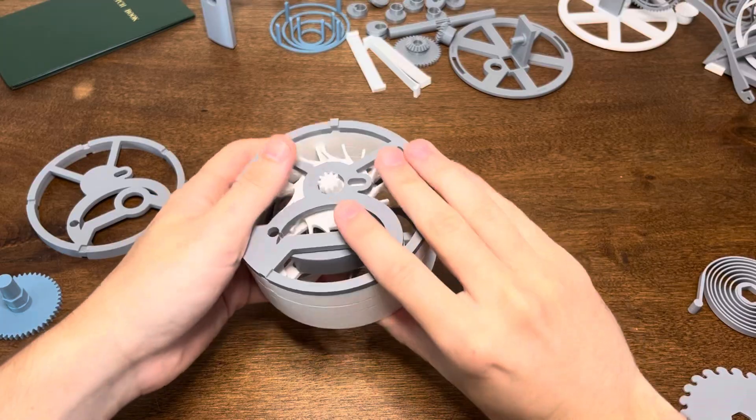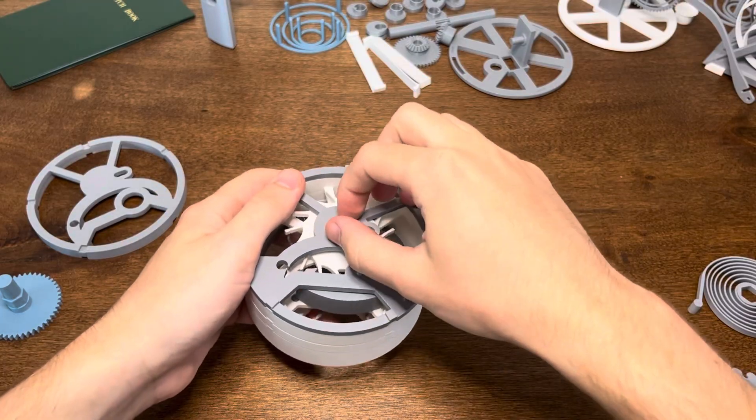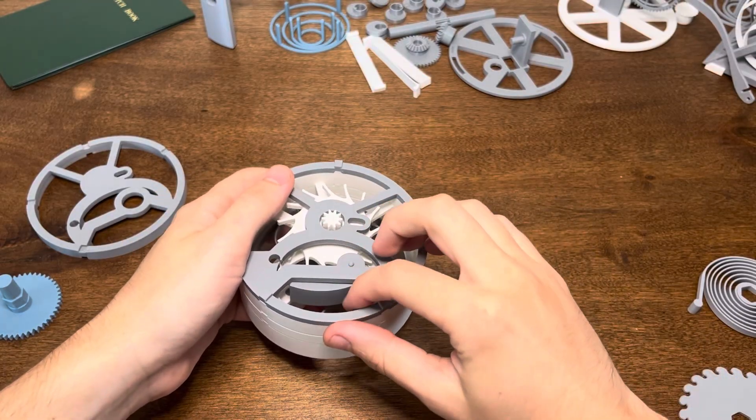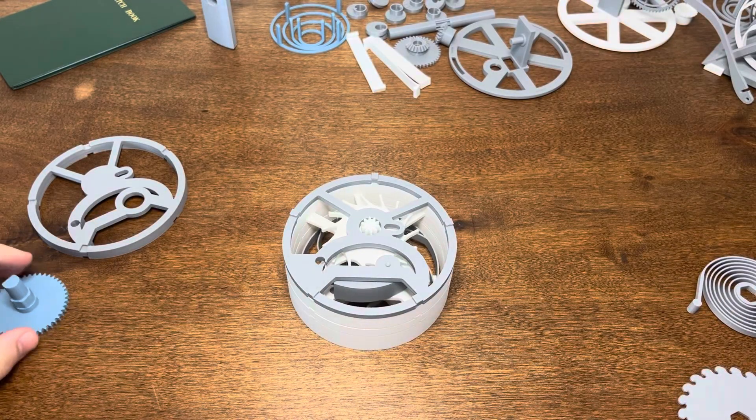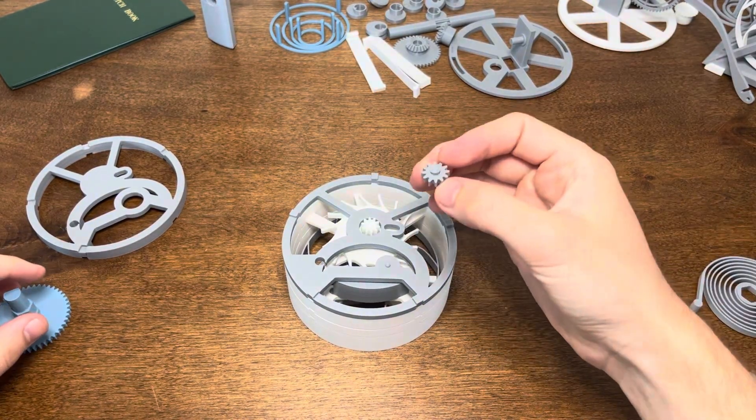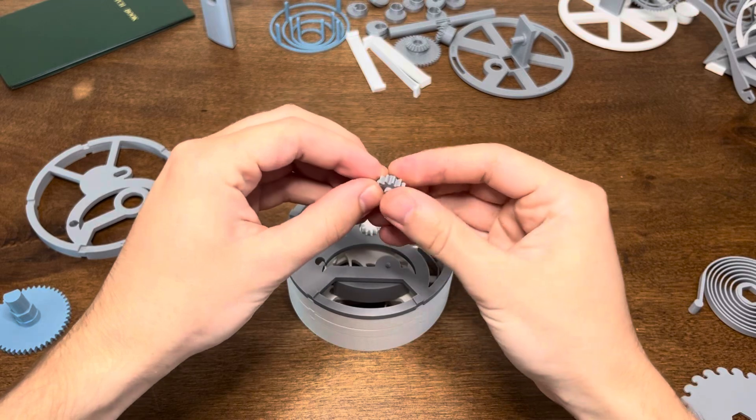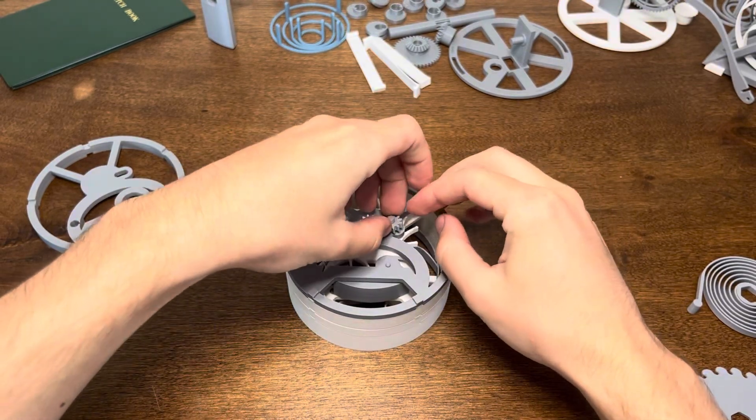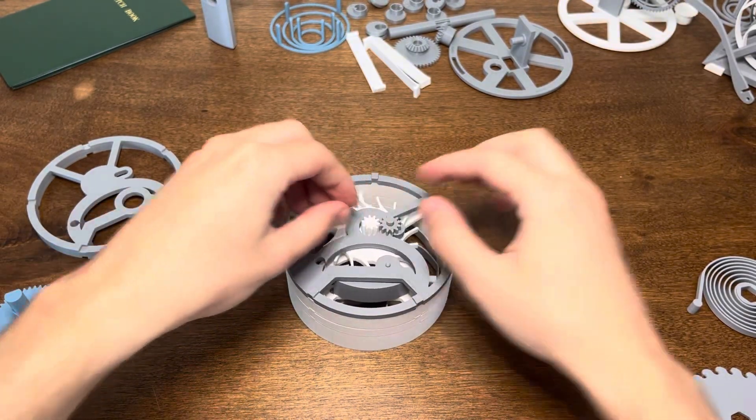So back to the build. It's always important to reduce your amount of resistance in this assembly. Just make sure everything runs smoothly and the pivot points don't have any friction or hang-ups anywhere. That will make it very easy for your system to run for the full two minutes.